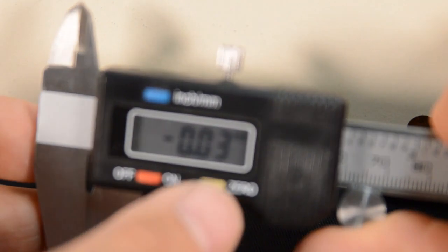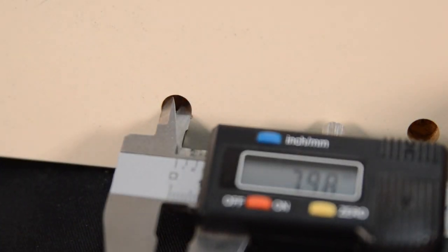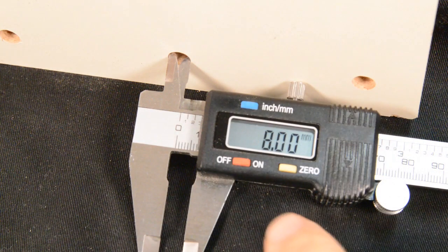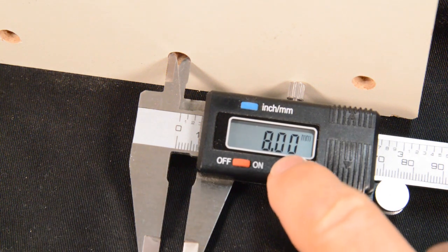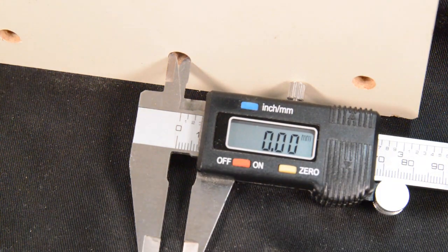Finding the center distance between the centers of two holes requires a two-step procedure. First, using the inside measurement jaws, measure the inside diameter of one of the holes. Press the zero button while the caliper is opened to the hole diameter.